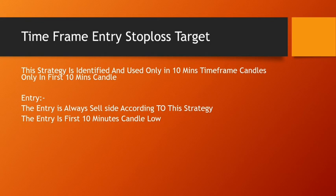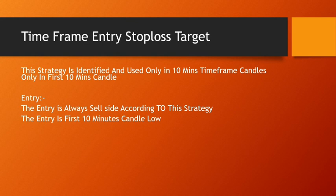If you are an option trader, you take the option entry at that point. Most of the time you will be taking ITM options. For Monday, Tuesday, and Friday you can take the ATM strike price. If trading on Wednesday, take the 100-points ITM strike price. If trading on Thursday, take the 200-points ITM strike price. Follow this option selection method consistently throughout the year, as options are usually in decay mode, so following these instructions will give you better results.